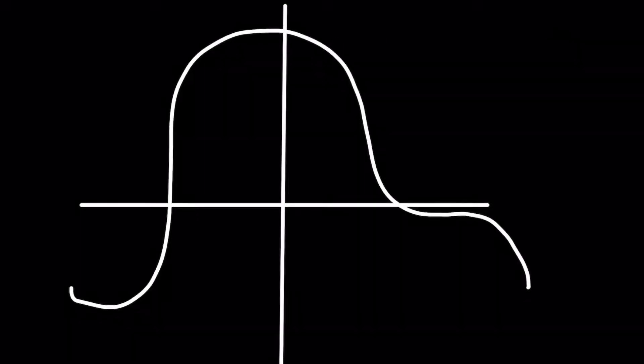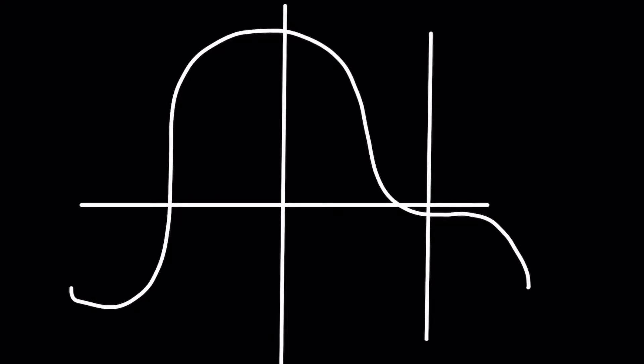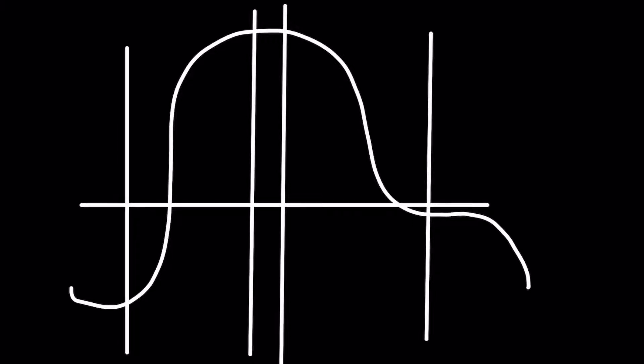Here's another example — try this one on your own. If I draw any line on this, is there going to be any point where it hits two points? If I draw a line here, it doesn't hit two points. If I draw a line here, it's not going to hit two points. So this is a function because it doesn't go through more than one point. If it went through more than one point anywhere, it wouldn't be a function.